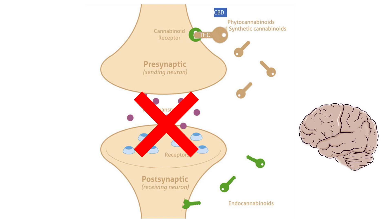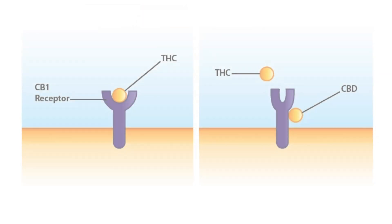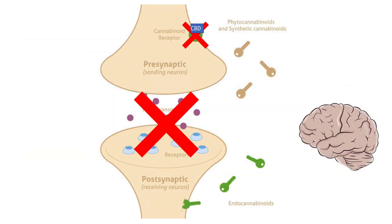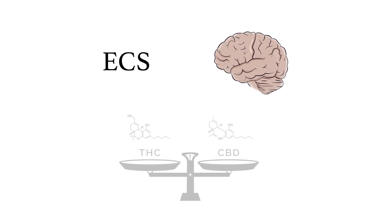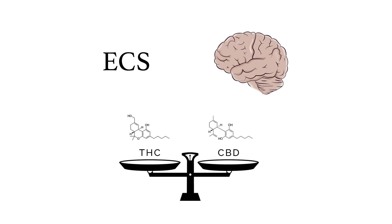CBD works in many places, but one mechanism is that it binds to the cannabinoid receptor in a different way from THC. It causes the receptor to change shape, so THC or the endocannabinoids can no longer fit. This causes an opposite effect, and instead of turning off the signal, it causes the signal to start again. The key concept here is that CBD and THC seem to work in opposite ways to provide balance to the signaling of neurons in the brain. This can be important in certain conditions that result in the ECS being out of balance, and the addition of CBD and THC help to restore that balance.